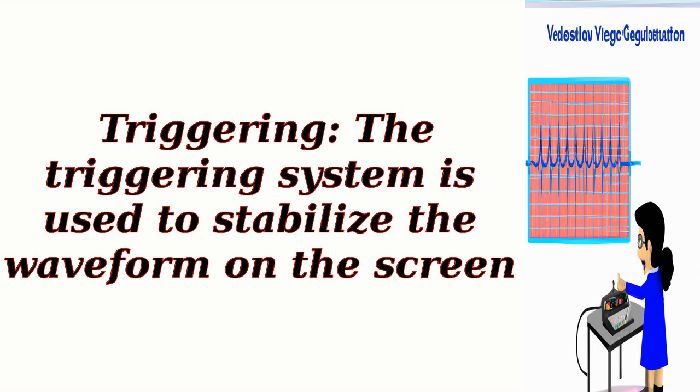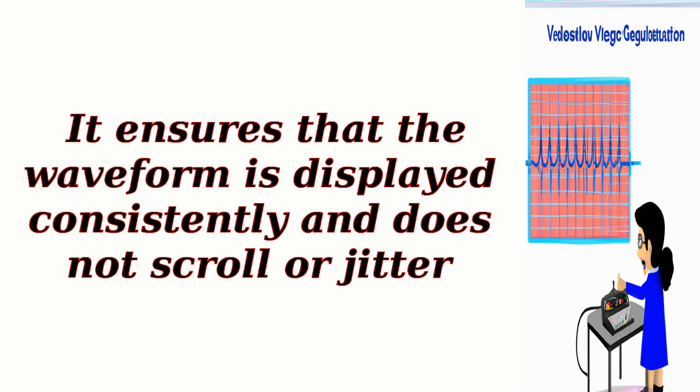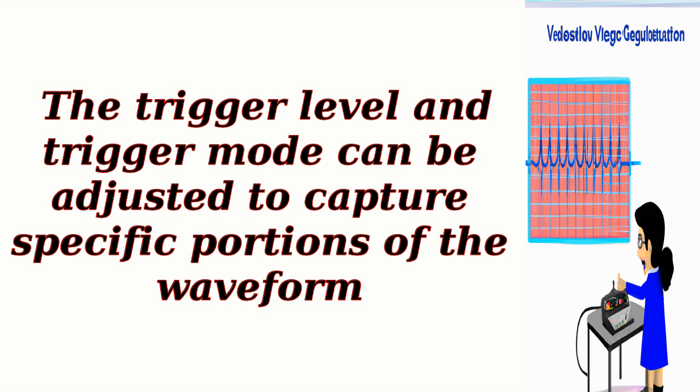Triggering: the triggering system is used to stabilize the waveform on the screen. It ensures that the waveform is displayed consistently and does not scroll or jitter. The trigger level and trigger mode can be adjusted to capture specific portions of the waveform.